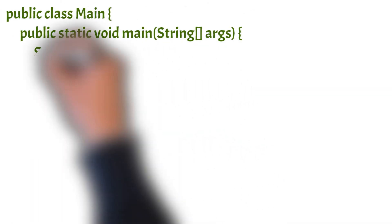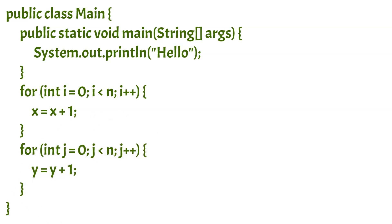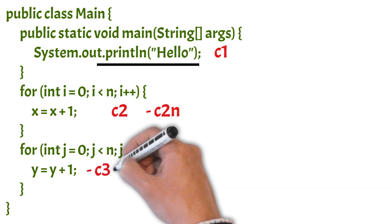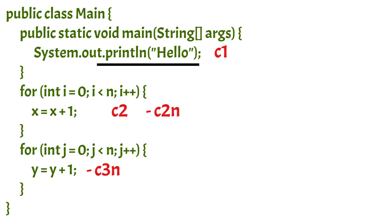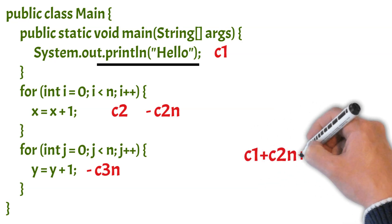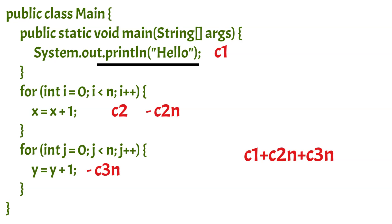Let's take an example and calculate the time complexity. In this example, we have a print statement that takes constant time c1. The second statement, x = x + 1, also takes constant time c2 and runs n times, so it takes c2n time. Similarly, the third statement takes c3n time. In sequential statements, we add the time taken by all statements to find the total time: c1 + c2n + c3n. In Big O terms, we ignore the constant part and consider only the worst case, so the overall time complexity is O(n).